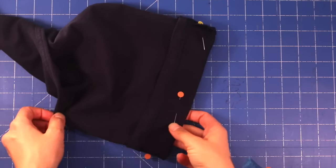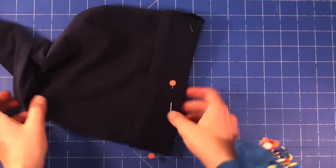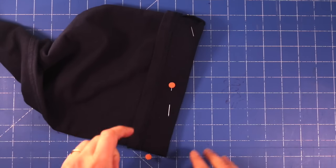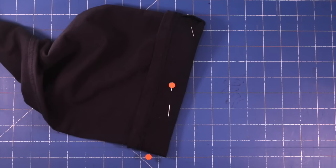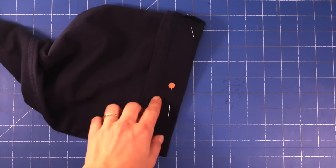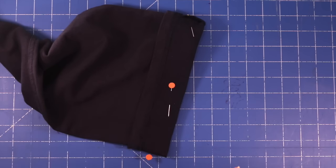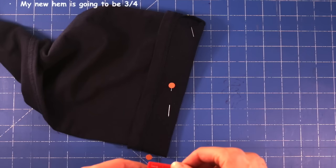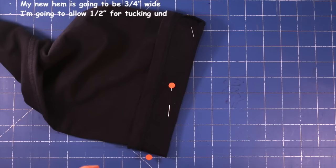So I've pinned all the way around and it's turned up evenly. Now, what I'm going to do is work out how wide I want my new hem to be and then I'll need to add a little bit onto that because what we're going to do is we're going to tuck the raw edge under to hide that away and stop it from fraying. If you don't understand what that means now, hopefully you will as we work through the tutorial. I've decided that I want my new hem to be three quarters of an inch wide. And then I'm going to add on about half an inch to allow for tucking under.